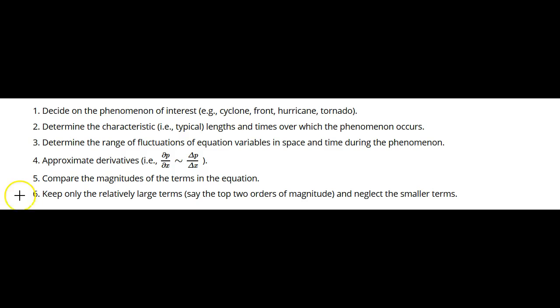First, determine the phenomena of interest, whether it be cyclone, front, hurricane, tornado, synoptic scale, winter weather. Determine the characteristic, that is, typical lengths and times over which the phenomenon occurs. Determine the range of fluctuations of equation variables in space and time during the phenomenon.